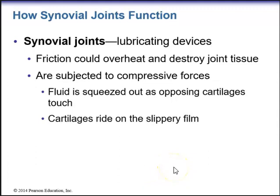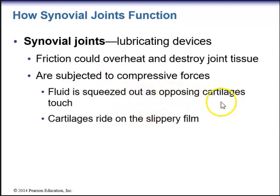Synovial joints have lubricating devices because friction between two bones could overheat and destroy joint tissue. Synovial joints are subjected to compressive forces, and fluid is squeezed out as opposing cartilages touch. The cartilage can ride on a slippery film, allowing them to slide past one another and decrease friction.